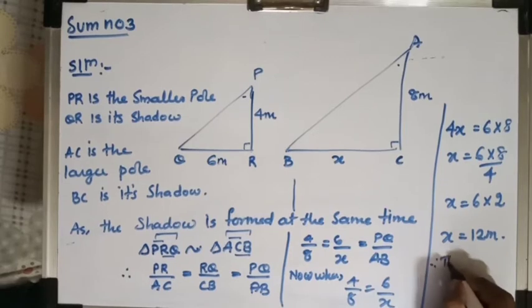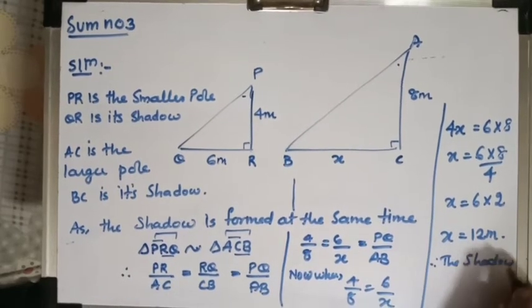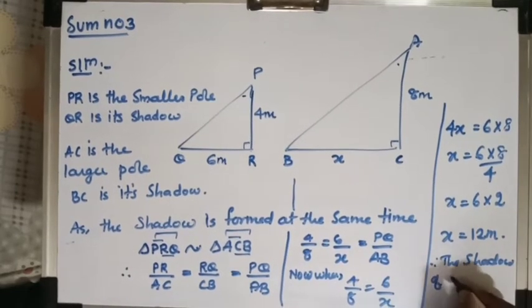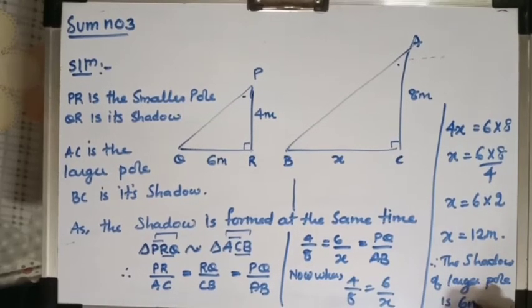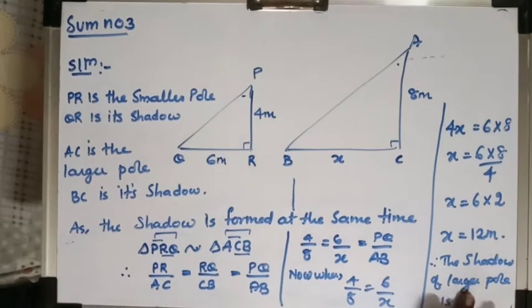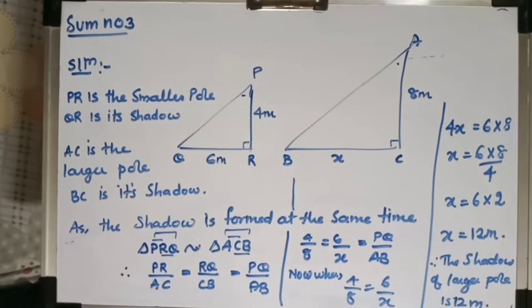Therefore, the shadow of the larger pole is 12 meters. This completes sum number 3.